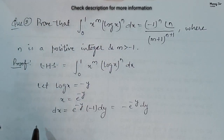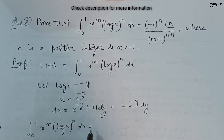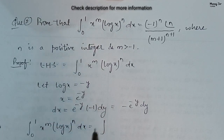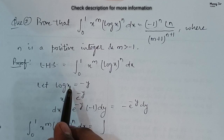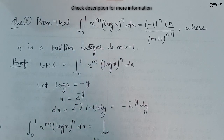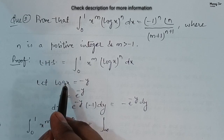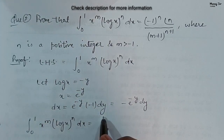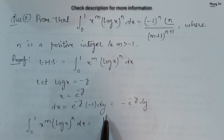Now the LHS becomes the integral from 0 to 1 of x to the power m times (log x) to the power n dx, transformed into y. When the lower limit of x is 0, log 0 becomes infinity, so y equals infinity. When the upper limit of x is 1, log 1 is 0, so y equals 0. Therefore the limit of x from 0 to 1 becomes the limit of y from infinity to 0.